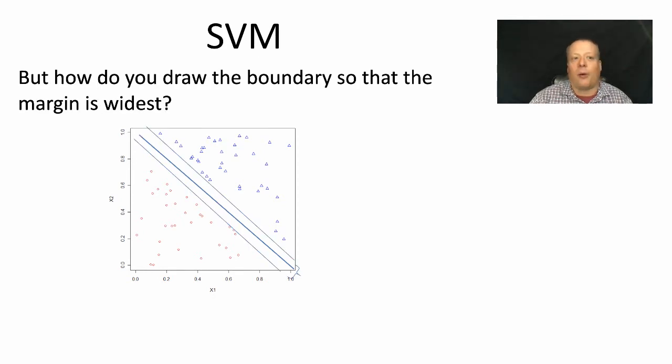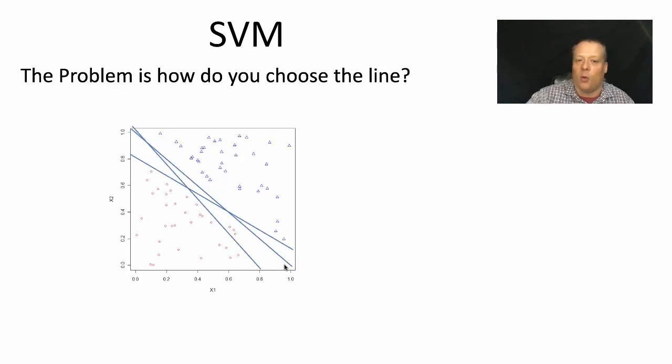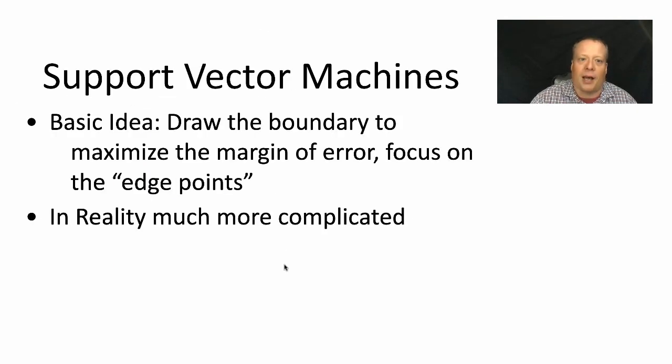Now, how do you draw that boundary so that the margin is the widest? So this is one particular way you could draw that boundary so the margin is even wider. But you could draw that potentially in other ways. It might be that one of these other lines actually also has a wide boundary. And how do you calculate the wide boundary? And all these kind of questions come up. So the basic idea is simple. Draw the boundary to maximize the margin of error and really you want to focus on the edge points. If you've got a way to group all those things together, then you want to focus on the points that are close to each other so that you know how to draw that line.